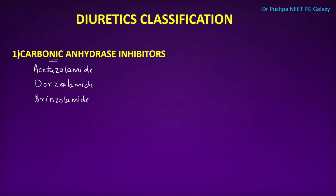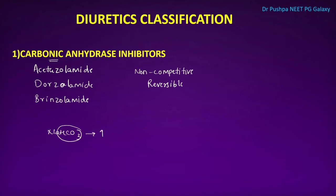These are non-competitive and reversible inhibitors of carbonic anhydrase. As they block carbonic anhydrase, sodium bicarbonate is not absorbed and is lost in the urine. Because bicarbonate is lost, there is an increase in acidic content, causing metabolic acidosis. They also inhibit sodium chloride absorption, increasing the sodium load in the collecting duct.